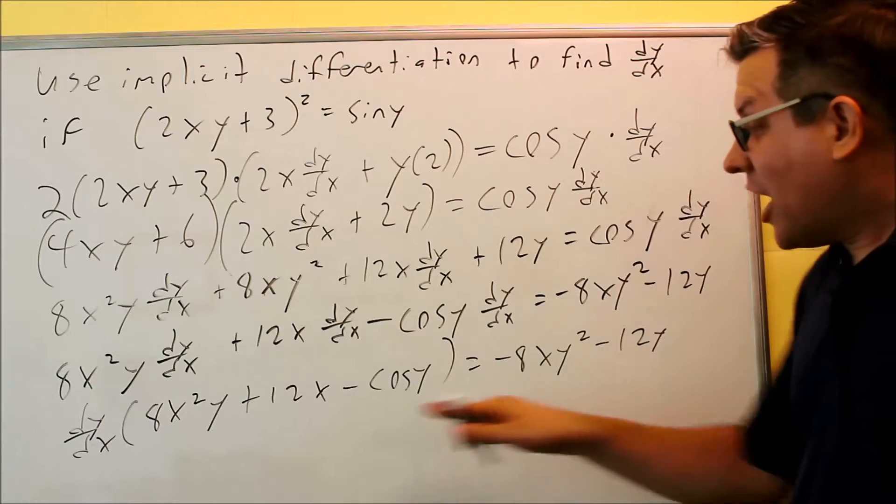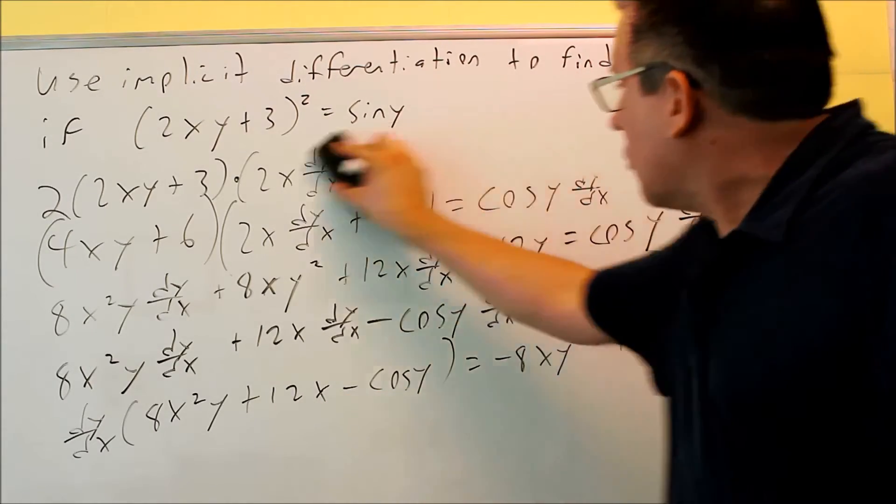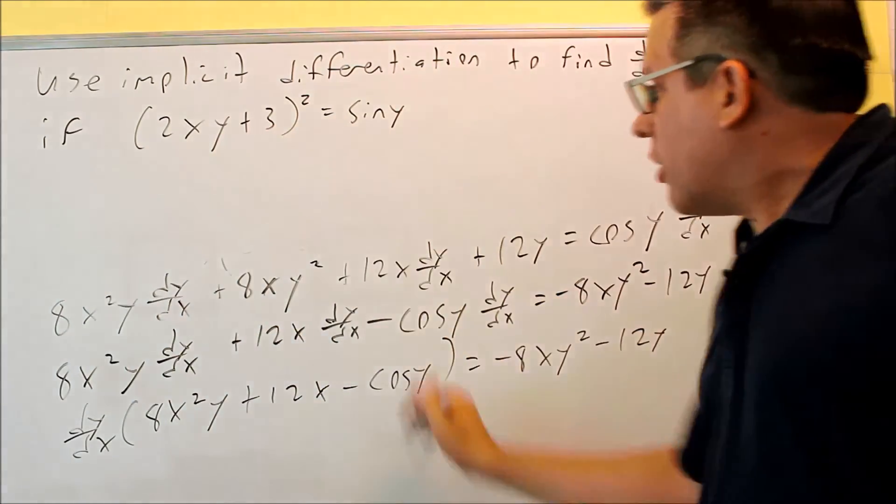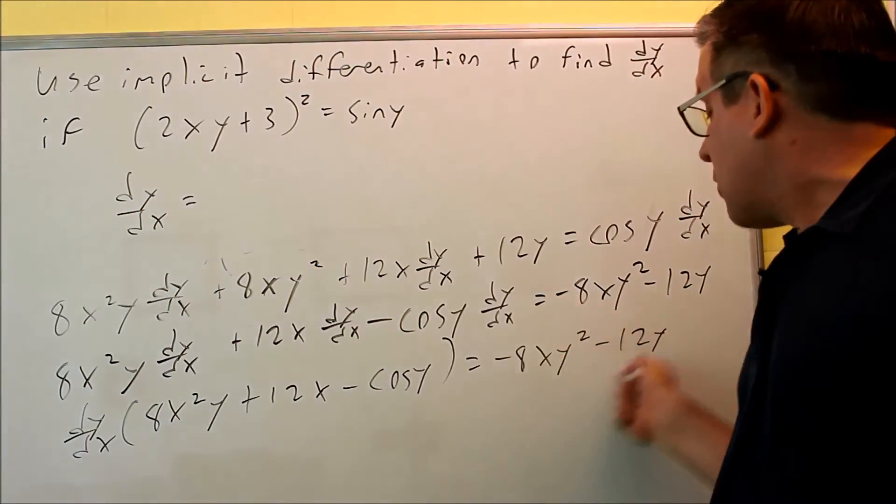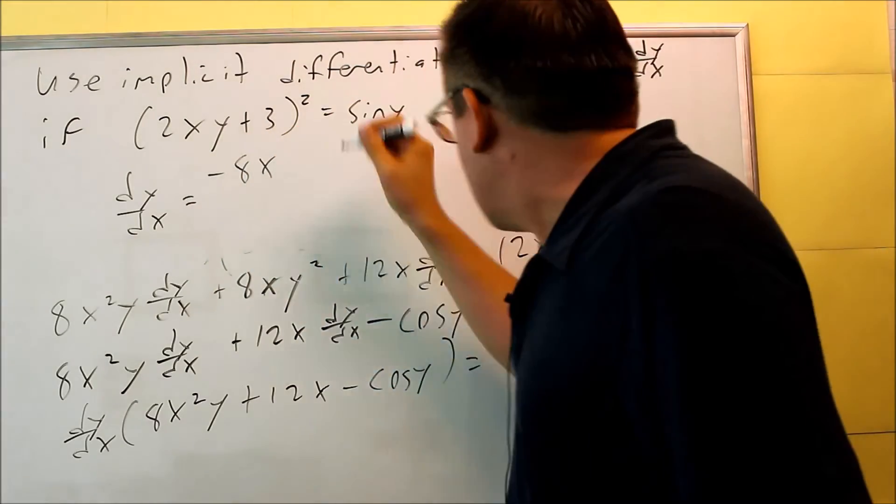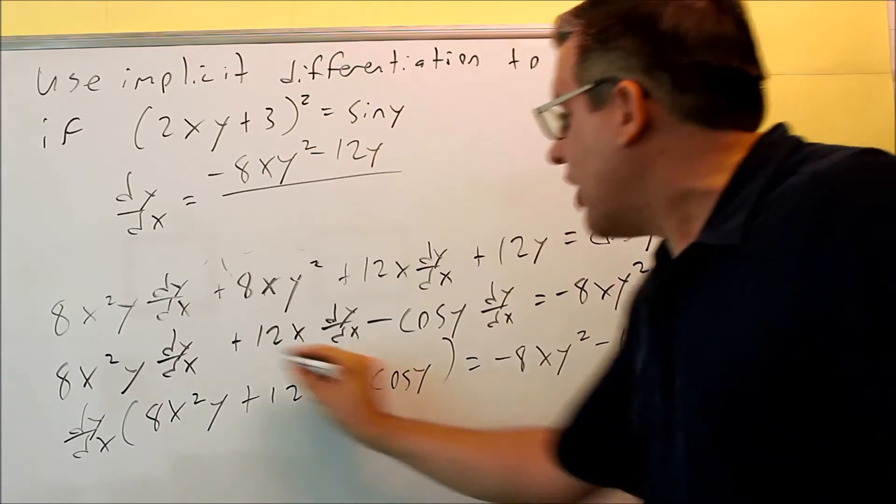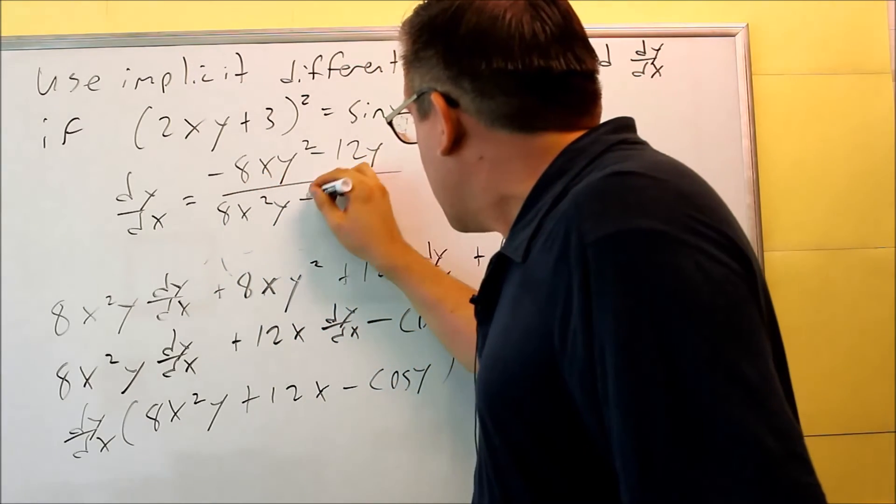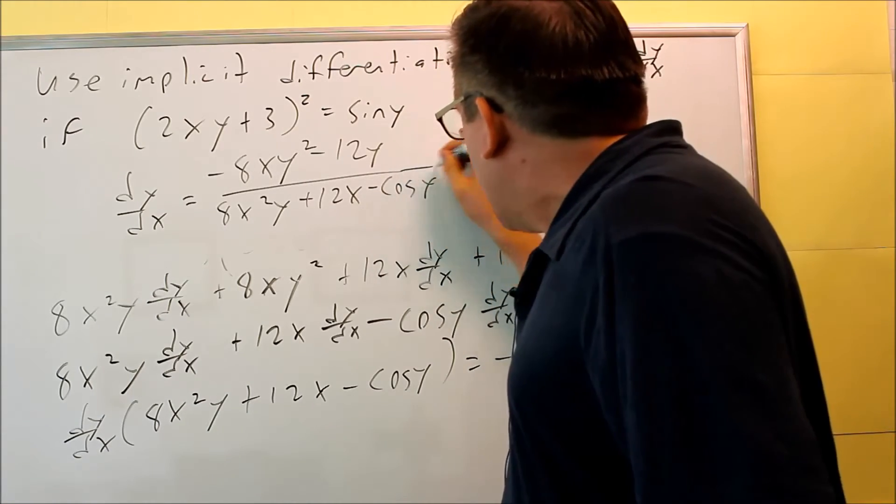Now I have this. What I'll do now is divide both sides by what's inside the parenthesis, and that's finally going to allow us to get the answer. So I have this part right here is going to be divided by this part. So this part stays on top, negative 8xy² minus 12y, dividing it by everything you see inside the parenthesis. So 8x²y + 12x - cosine y, and then that would be the answer.